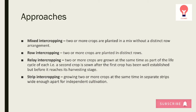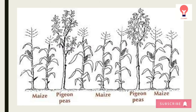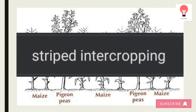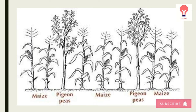In this picture, you can see an example of strip intercropping. One strip is of maize, then peach and peas, then again maize and pigeon peas, and maize.